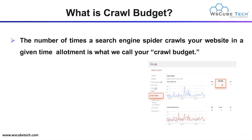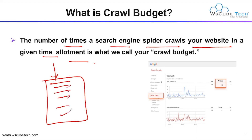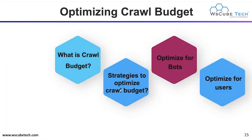Next is crawl budget. The number of times a search engine spider crawls your website in a given allotted time is called your crawl budget. For example, if the Google crawler visits your website once initially and then again when you make changes, your crawl budget is two, because the web spider visited your website twice.